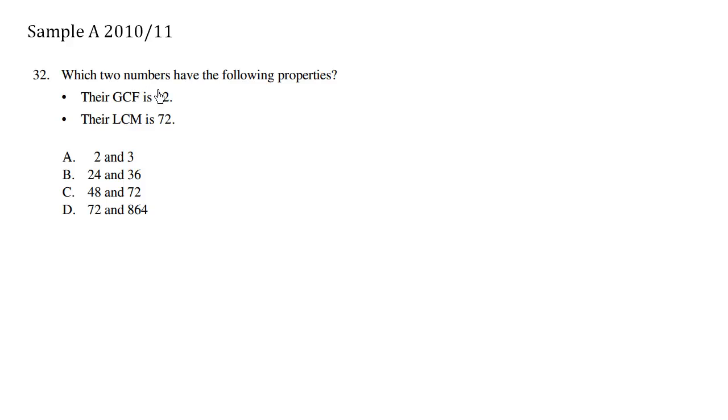The idea of GCF is you break down these numbers into its factors and you try to find the greatest common factor, the greatest factor that's the same. The LCM is the lowest number that both these numbers fit into.